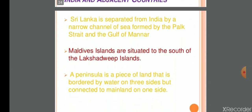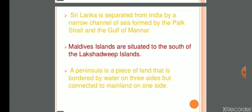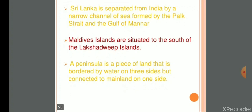Sri Lanka is separated from India by a narrow channel of sea formed by the Palk Strait and the Gulf of Mannar. Maldives Islands are situated to the south of the Lakshadweep Islands. A peninsula is a piece of land that is bordered by water on three sides, while an island (dweep) is a piece of land that is surrounded by water on all four sides.